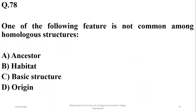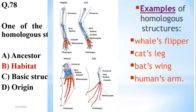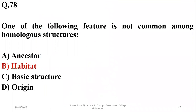One of the following features is not common among homologous structures. Homologous structures have a common ancestor and a common basic structure and origin, but the habitat is variable. That is why they have developed different functions. So B — habitat — is variable and not common among homologous structures.